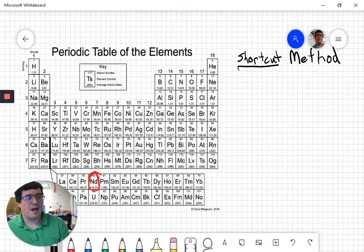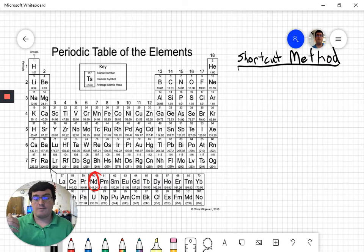Shortcut method. You'll hear some people calling this the group 18 method. Some folks call this the noble gas notation. There's a lot of different names for this. You'll always hear me refer to it as a shortcut. Sometimes I'll throw in group 18. But here's the idea, right?